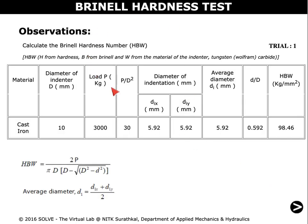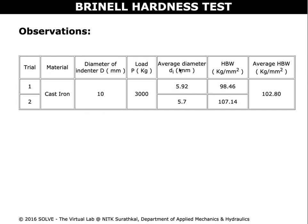These are the observations for trial 1. We can calculate the Brinell hardness number by using this formula. Similarly, we carry forward for trial 2. These are the observations for the two trials carried in this simulation. The average Brinell hardness number can be found.